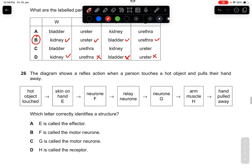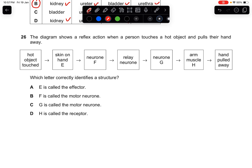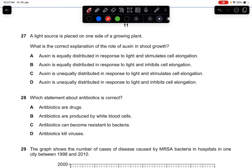Question twenty-six: the diagram shows a reflex action when a person touches a hot object. Which letter correctly identifies a structure? E is the sensory neuron area near the skin, F is not the motor neuron, G is the motor neuron (correct — it occurs before reaching the muscle), and H is not the receptor. The answer is C.